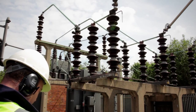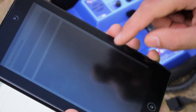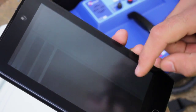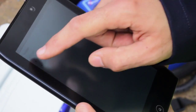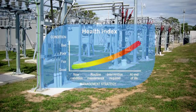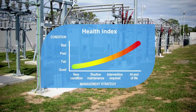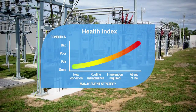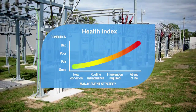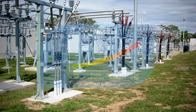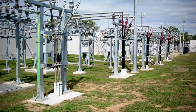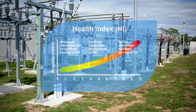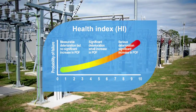The engineer can then make a record of the location and severity of the problem, rate the health of the asset and decide on the best action to prevent the fault developing into failure, including a planned shutdown for maintenance intervention or replacement.